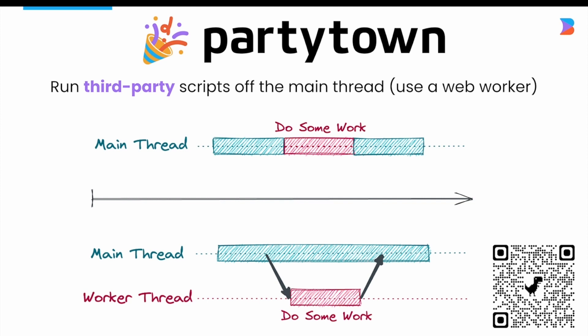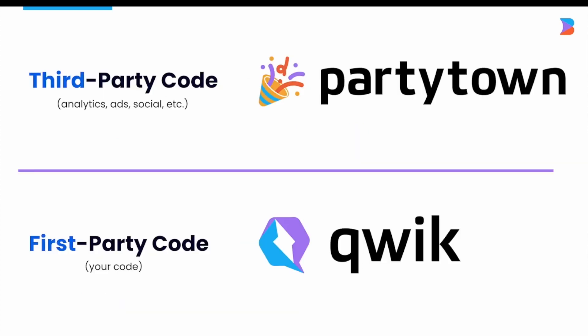While PartyTown addresses the third-party script problem, Quick addresses the first-party script problem. First-party code means your code — the code you have control over — including the framework code being imported, the components being written, and the main scripts executed from your site. The immediate question is: why is Quick any different?